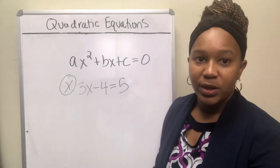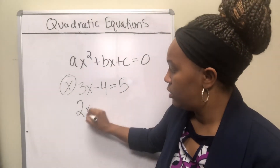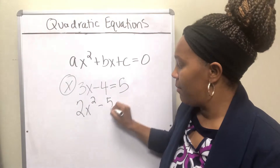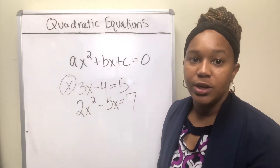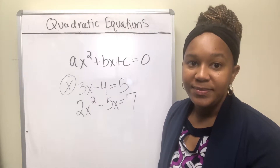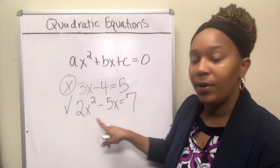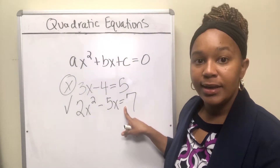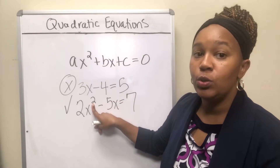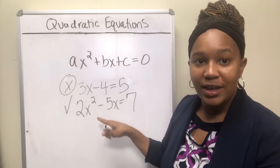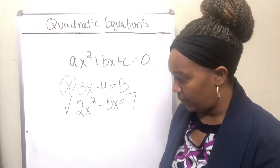This is not a quadratic equation. Another example: 2x squared minus 5x equal to seven. Is that a quadratic equation? Yes, that is a quadratic equation. There is one variable, x. There is an equal sign, and the highest exponent — this term has a one, but this term has a two — so the highest exponent on x is two. That makes it quadratic.